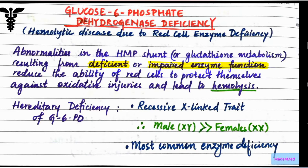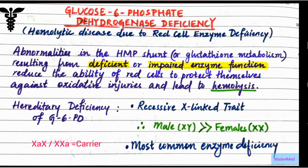The hereditary deficiency of G6PD is a recessive X-linked trait, which means it is expressed more in males than in females. Males have XY chromosomes, so a recessive X-linked trait will be expressed with the presence of a single recessive allele on the X chromosome. In females it has to be present on both X chromosomes to be expressed, so females mostly act as carriers of this disease.